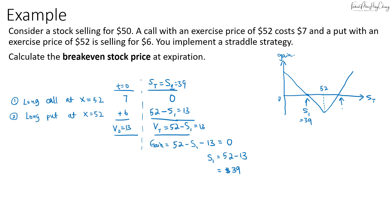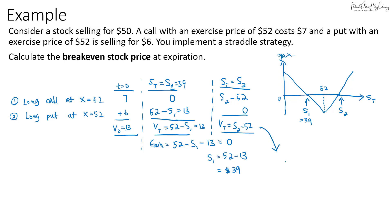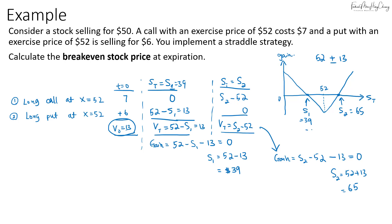For the second breakeven price s2, the call option will be in the money. The payoff is s2 minus $52, and the gain is (s2 minus $52) minus $13 equals zero, so s2 equals $52 plus $13, which is $65. An easier way to remember: just take the exercise price of $52 and add or subtract the initial value of $13 to get the two breakeven prices of $39 and $65.